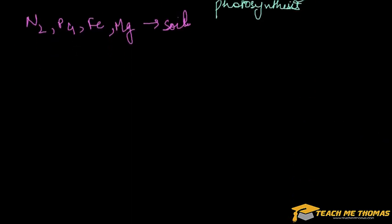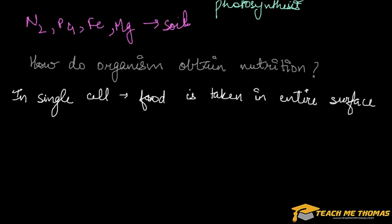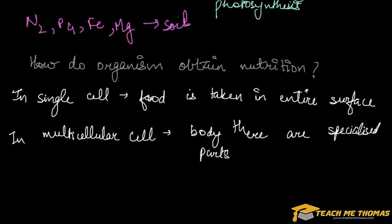The main question arises in heterotrophs - how do organisms obtain nutrition? In single cell organisms like amoeba or paramecium, food is taken in from the entire surface, which is the cell membrane. It acts as a pathway to take food from the external environment. But in multicellular organisms like human beings and animals, there are specialized parts to perform nutrition. For example, in humans, the nutrition process is completed with the help of the digestive system. And same way, the nutrition process is carried on in other animals also.